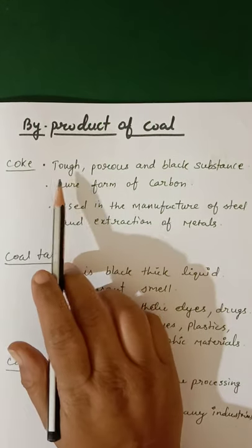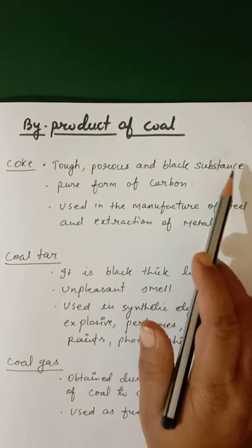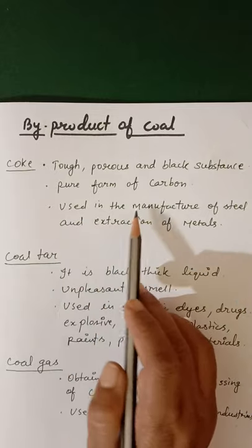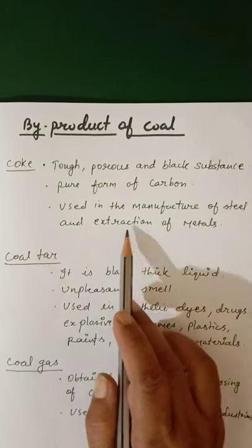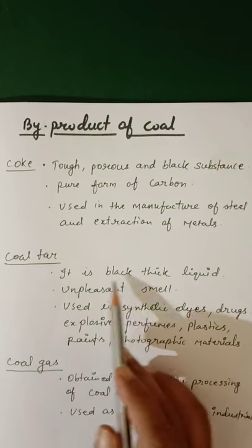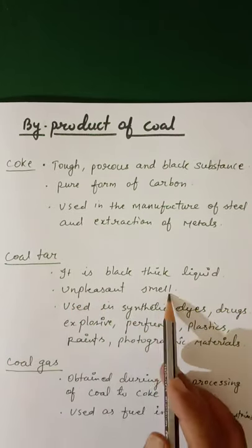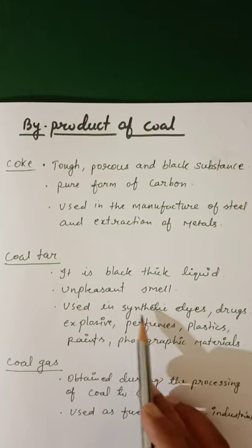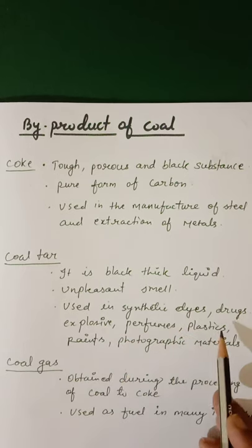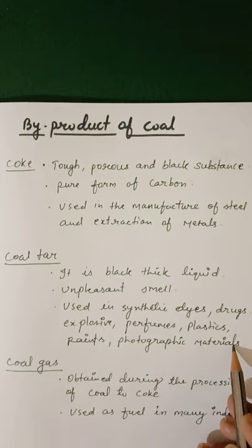Coke: it is a tough, porous and black substance. It is a pure form of carbon. It is used in the manufacture of steel and extraction of metals. Coal tar: it is a black, thick liquid with an unpleasant smell. It is used in synthetic dyes, drugs, explosives, perfumes, plastics, paints, photographic materials, etc.